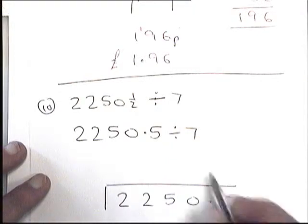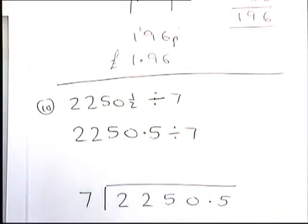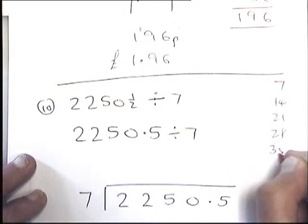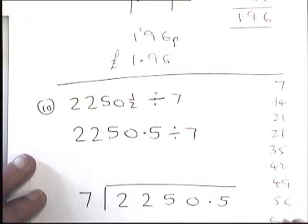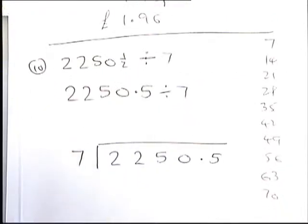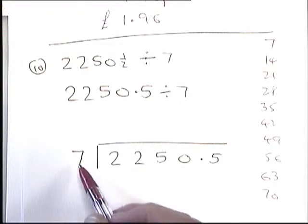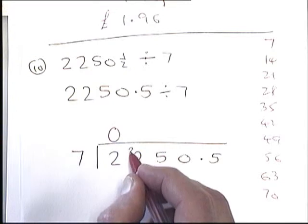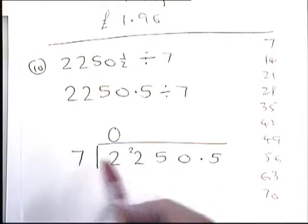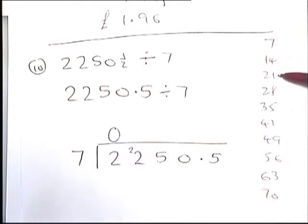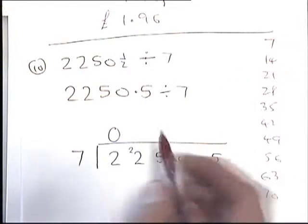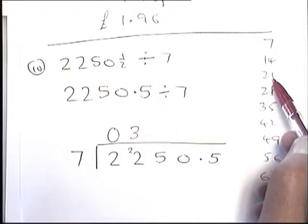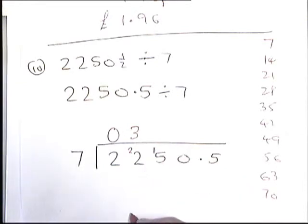Just like before, because I'm dividing by 7 I'll write the 7 times table down — students should have learnt it, if not write it down by adding on 7 each time. First, 7 into 2: 7 won't go, so put a zero and carry the 2 up, giving 22. Sevens into 22: 21 is the closest, so 7 goes 3 times with a remainder of 1.